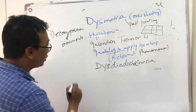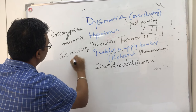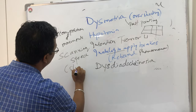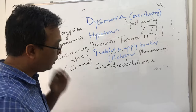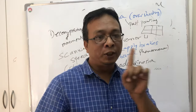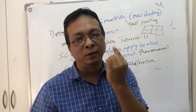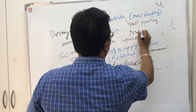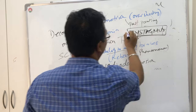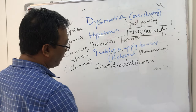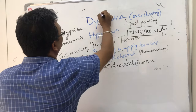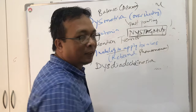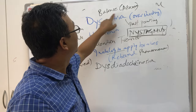Then speech - very important. The speech will be slurred; we call it scanning speech. It will not be fluent. Coming to the eyeballs - there will be shaking of the eyeballs, jerky movements of the eyeballs, which we call nystagmus. And we should not forget about balance - loss of balance, or ataxia - walking like a drunken person, a drunken gait.